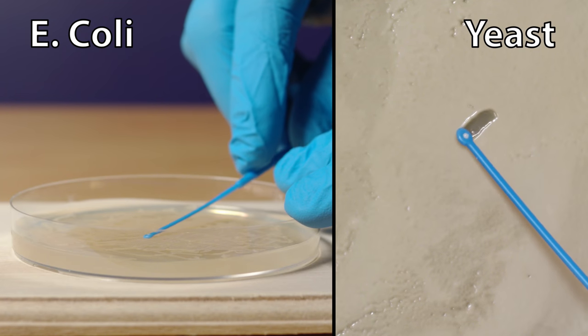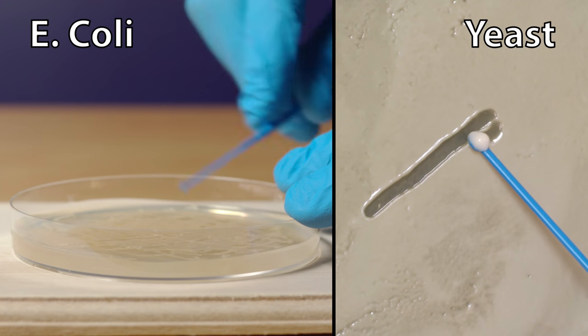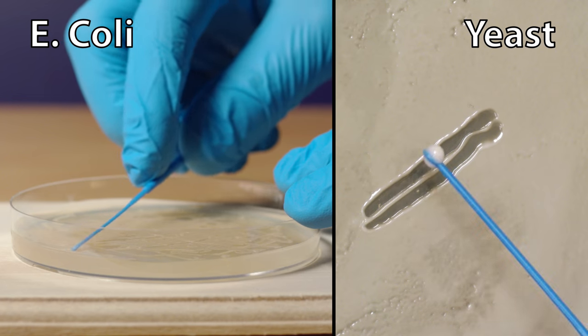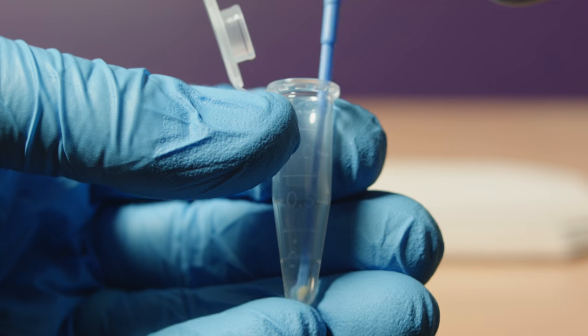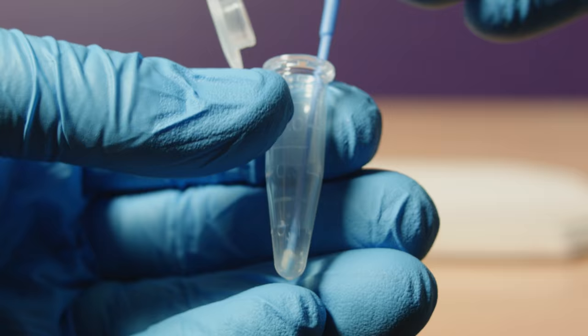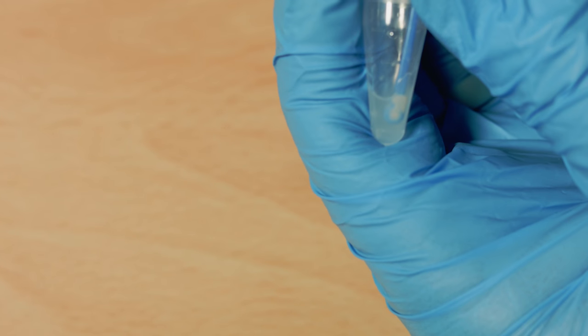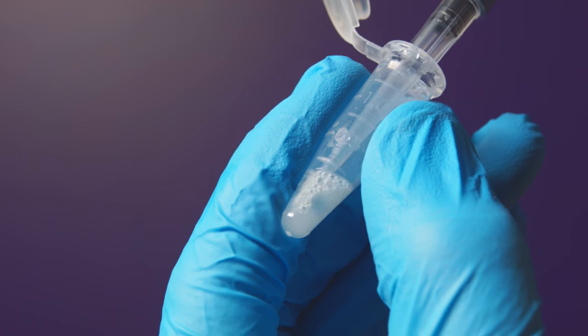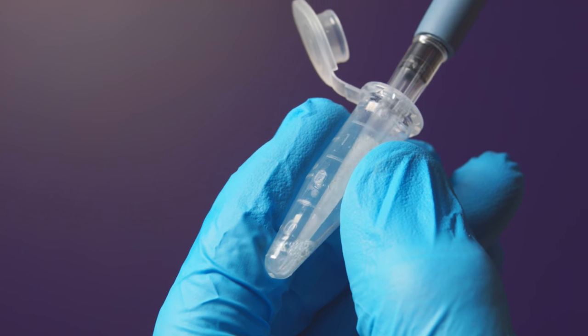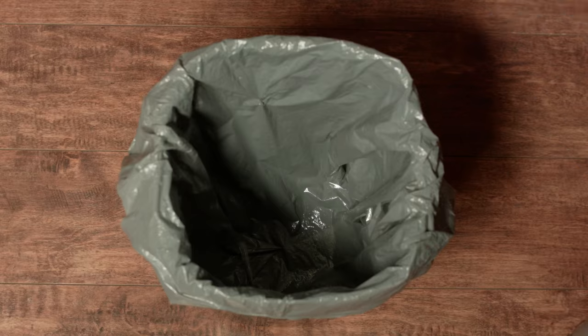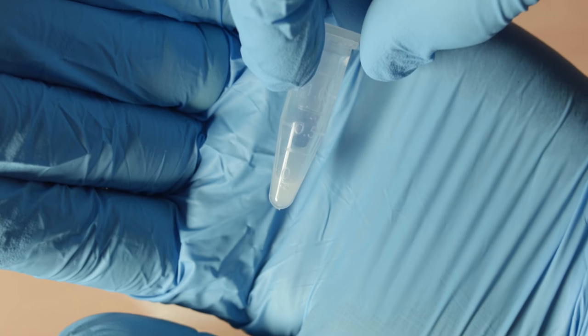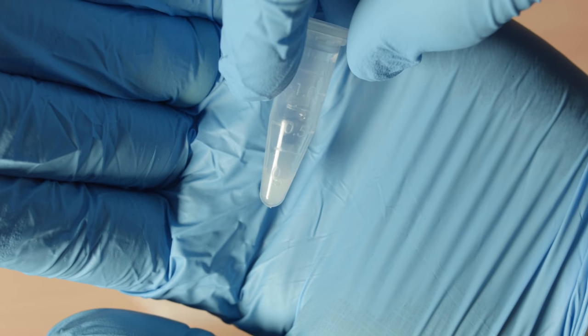With a separate inoculation loop for both, gently scrape up some of the yeast and E. coli. Mix it into their respective microcentrifuge tubes with the transformation mix. About two loopfuls of yeast and E. coli should be enough. With a new tip for each, you can pipette the mixture up and down to help the process along. Discard the tip. Mix until the liquid is opaque with no big clumps. I'll call these the E. coli or yeast competent cell mixtures.